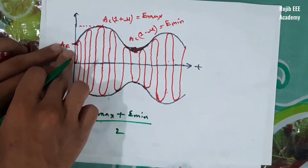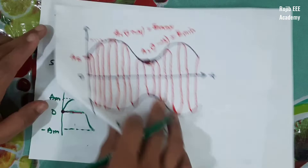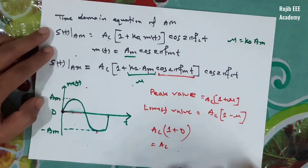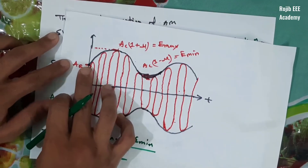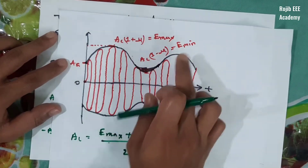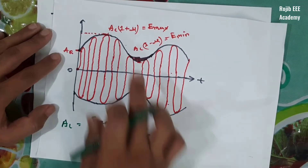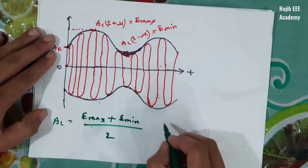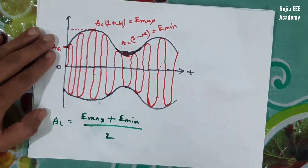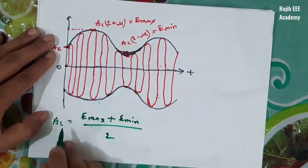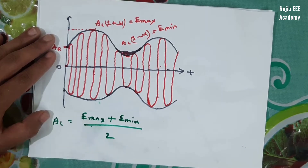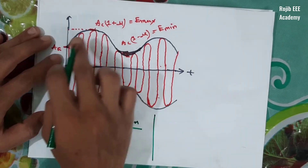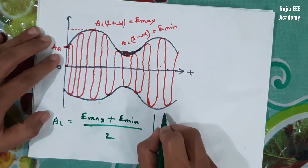We will see: E_minimum divided by 2 — that means Ac loses the middle. The formula shows we can find the middle value. The power formula: E_maximum plus E_minimum divided by 2. Therefore, we need mu. Our E_maximum expression is Ac(1 + mu).